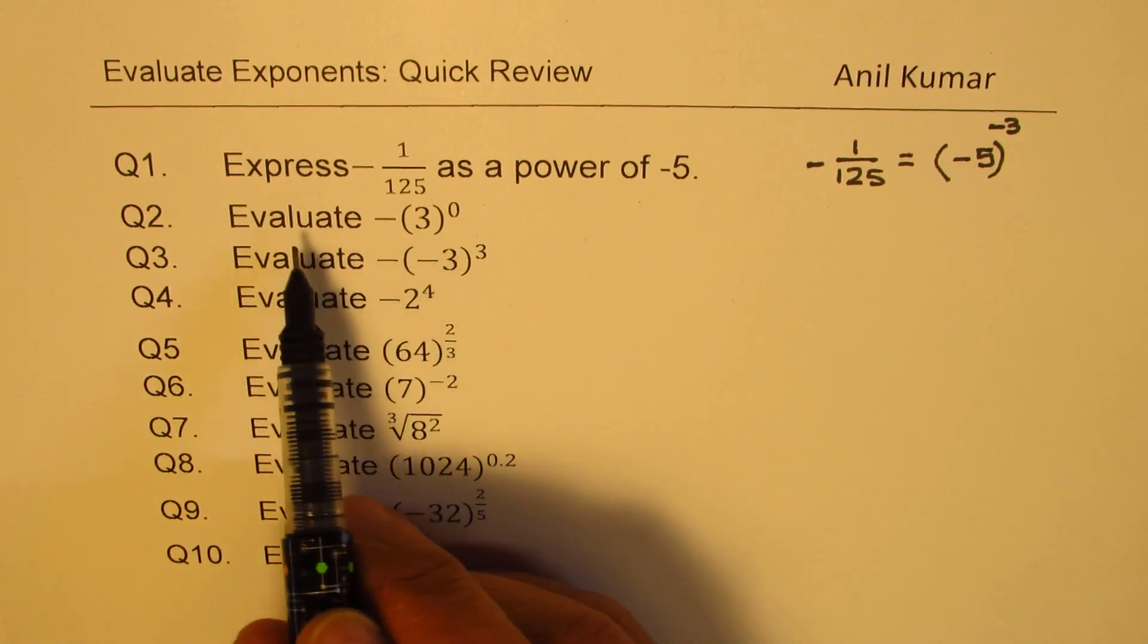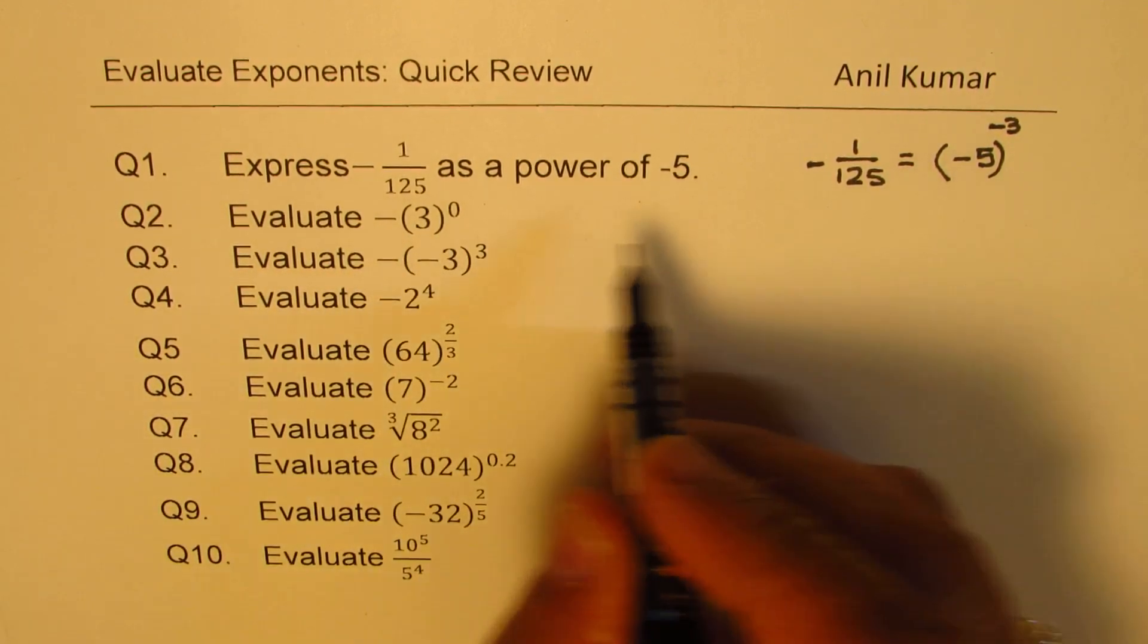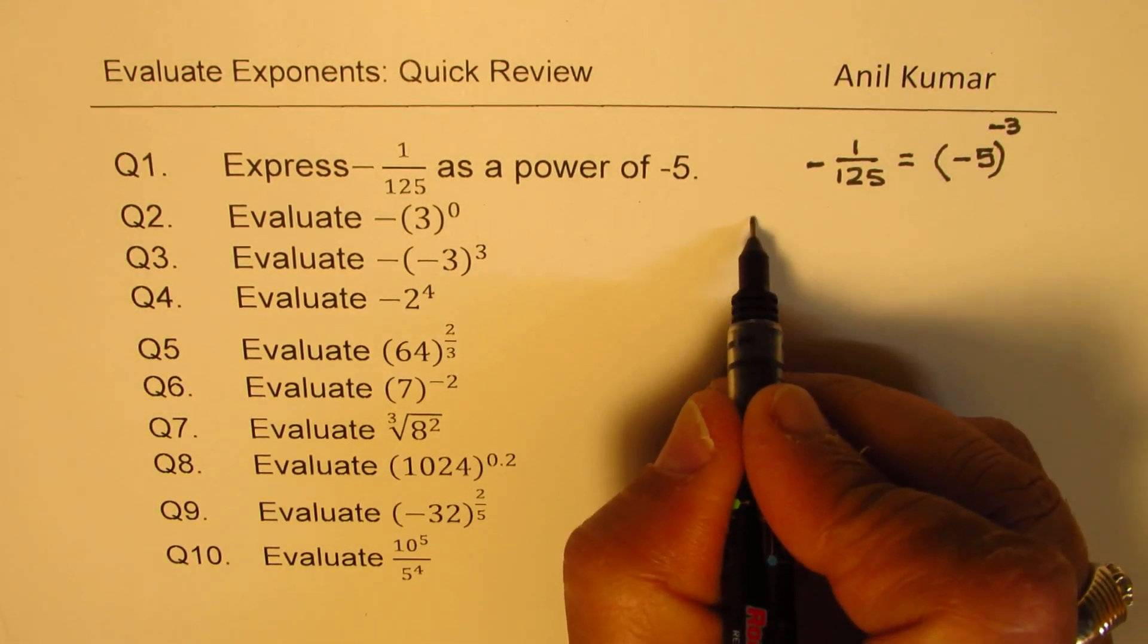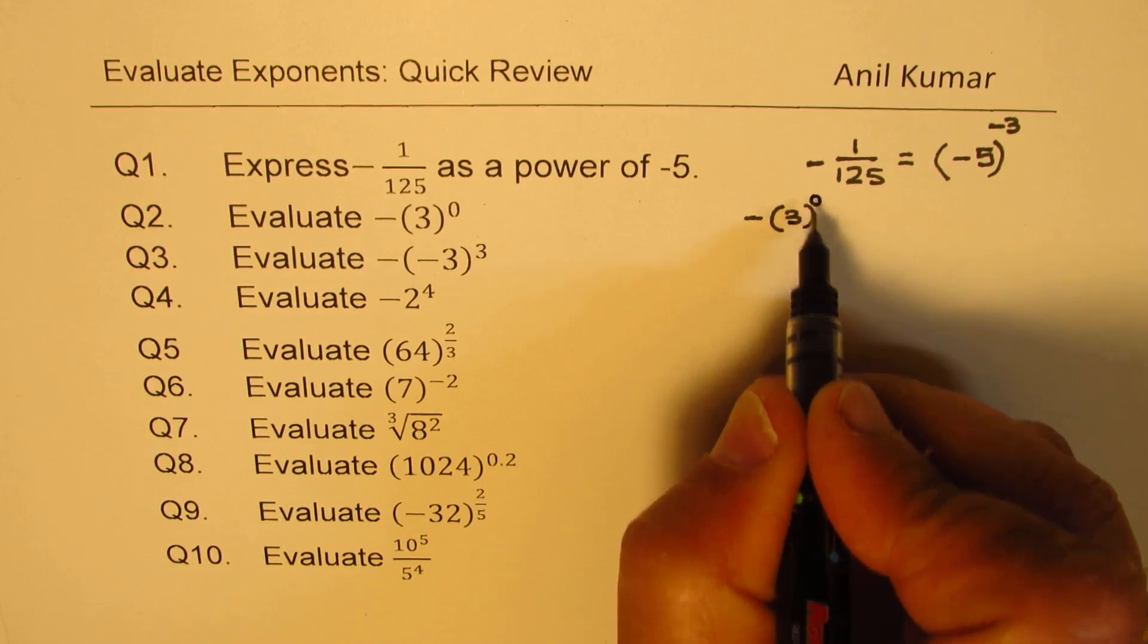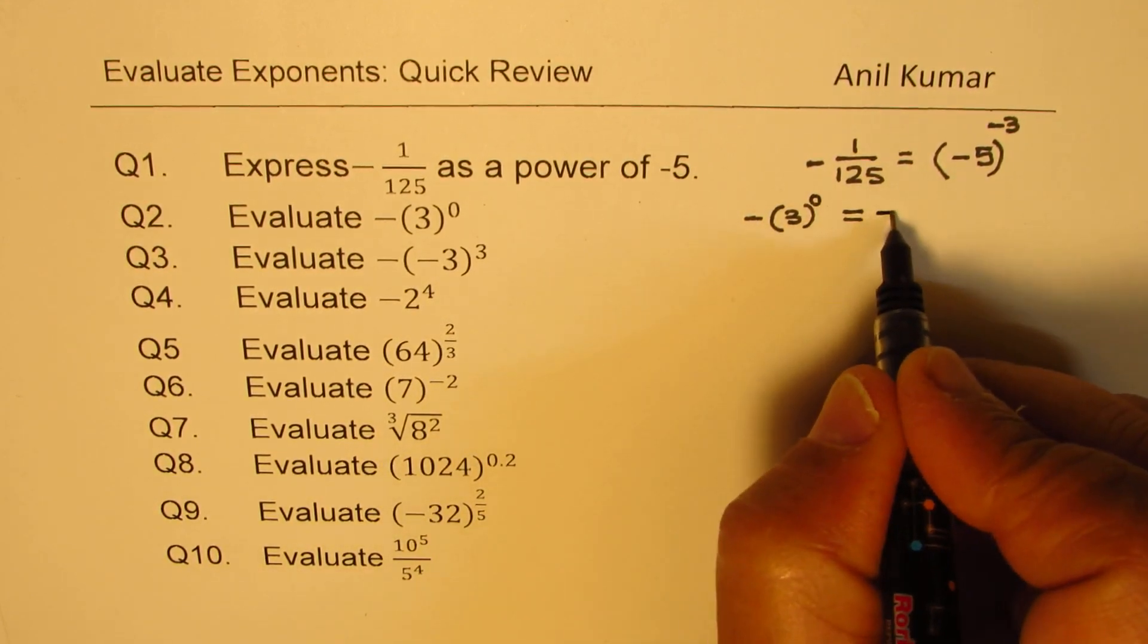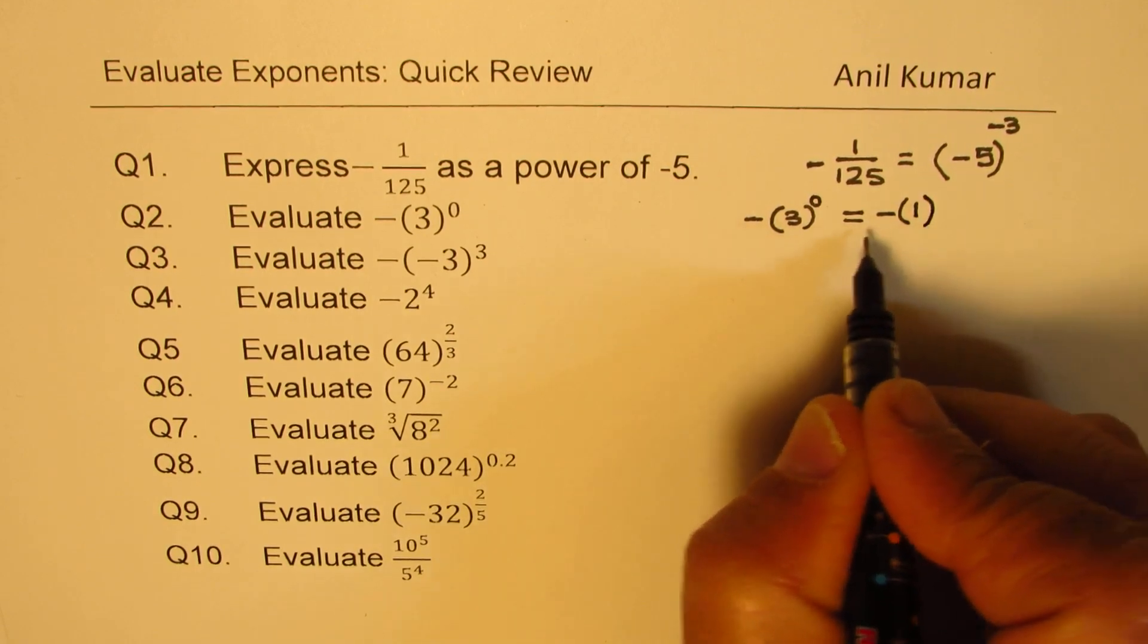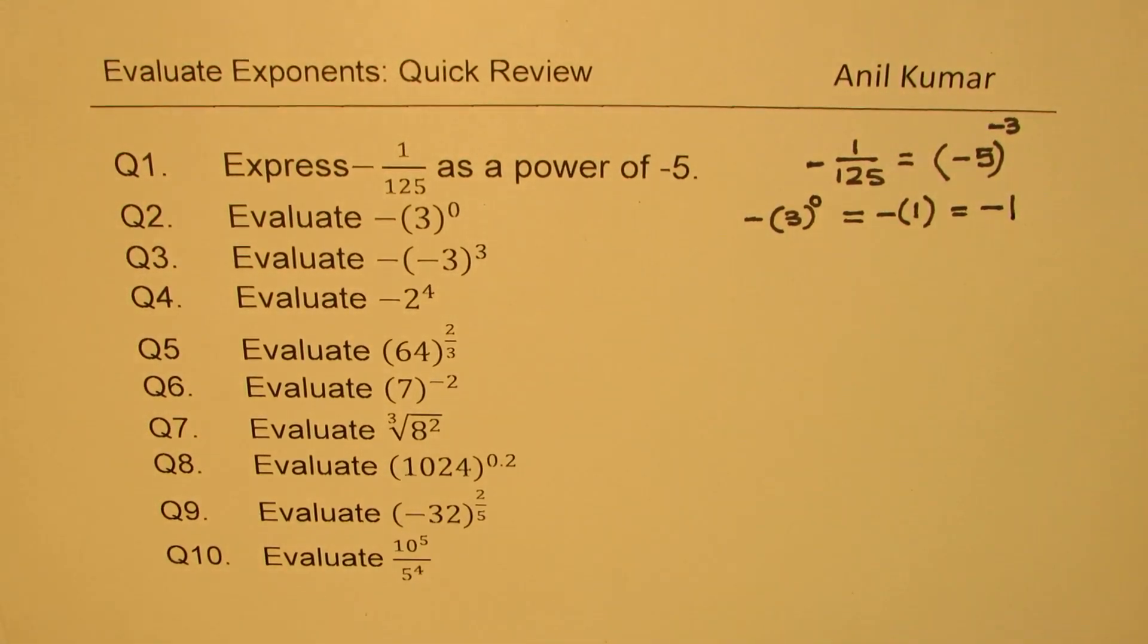The next one here is to evaluate minus 3 to the power of 0. Now anything to the power of 0 is 1. So we have minus 3 to the power of 0. First if you evaluate 3 to the power of 0, you get 1, and since minus is outside, the answer has to be minus 1.